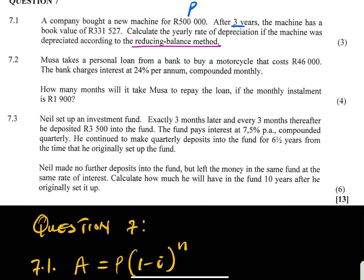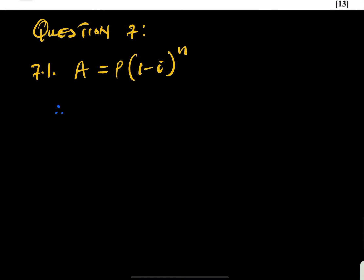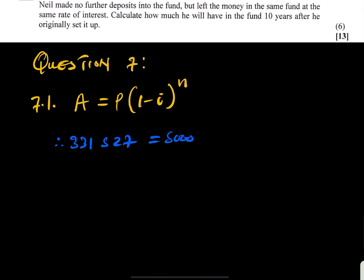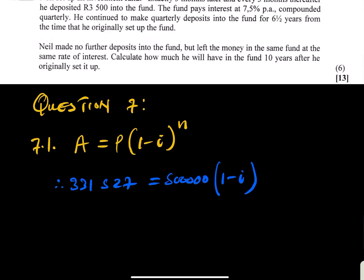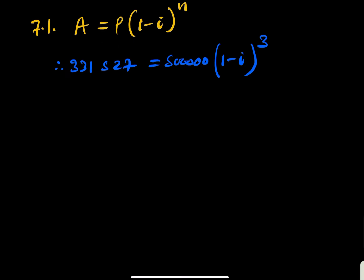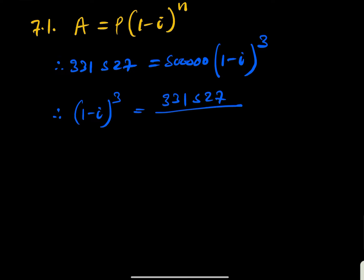Your A is 331,527. That equals P which is 500,000, multiplied by (1 - i) raised to the power of n, which is 3. You want to solve for i, so use basic algebra: divide both sides by 500,000. You will then have (1 - i)^3 = 331,527 divided by 500,000.